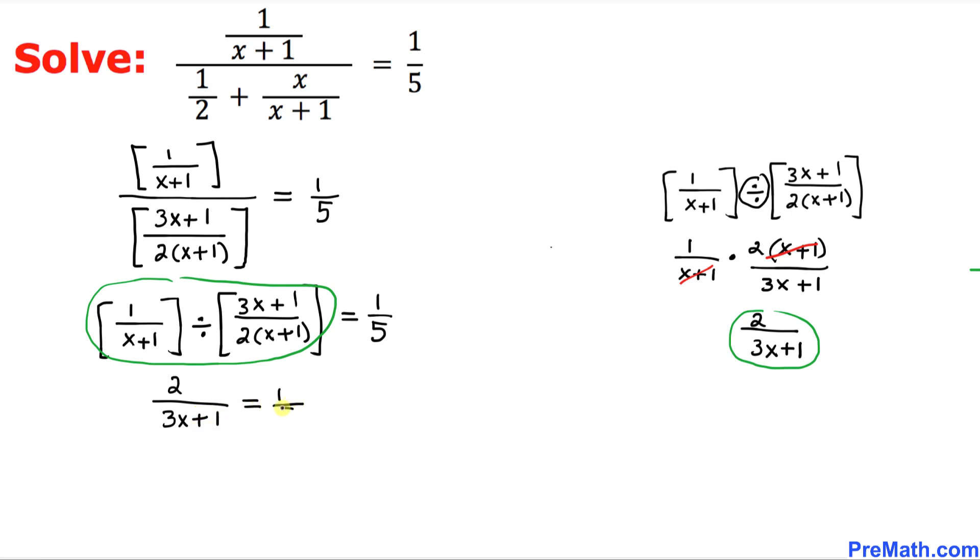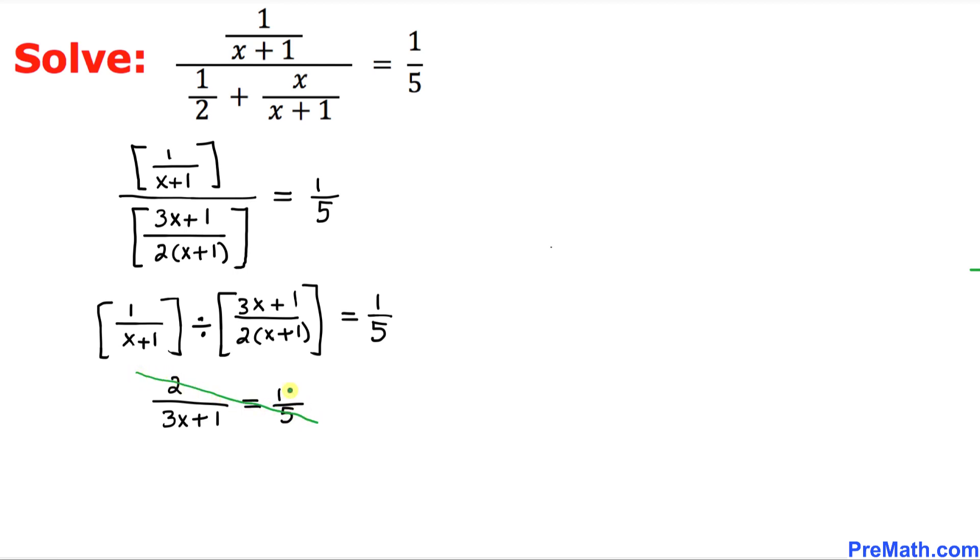And now we are going to take care of these fractions separated by equal sign. We are going to just simply crisscross. We are going to cross multiply. So first we are going to multiply 2 times 5, that is going to give us 10 on the left-hand side, equal to 1 times 3x plus 1 the other way around. That is going to give us 3x plus 1.